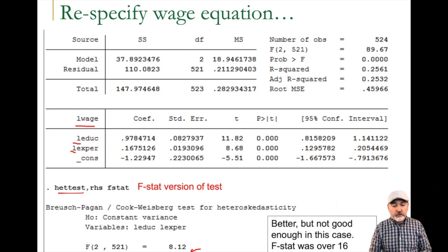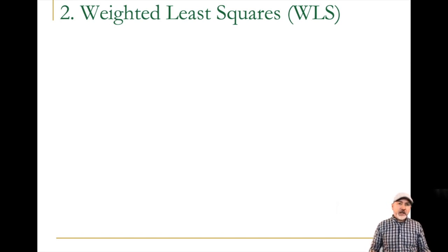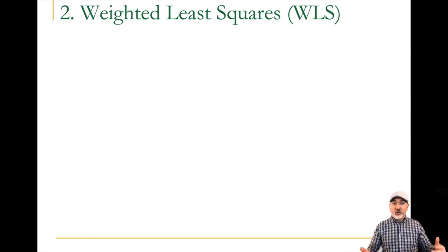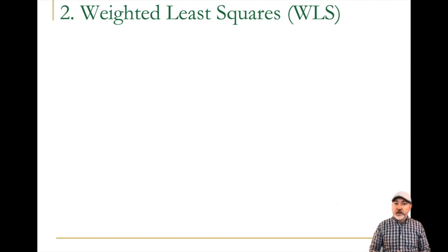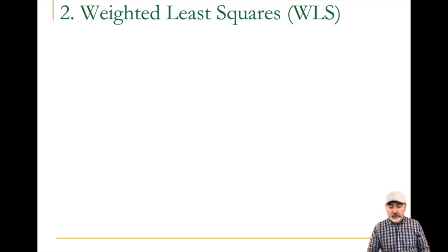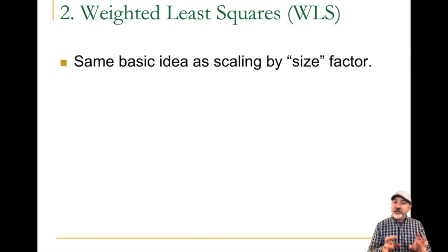That takes us to option number two: the weighted least squares approach. In a sense this is similar to what we just referred to in the re-specification option — dividing everything by the scale factor, whether it's population or number of workers. The only difference is that here we do this even if the new variable doesn't necessarily have an intuitive meaning.